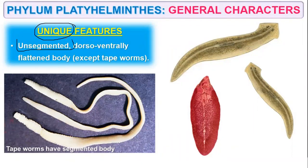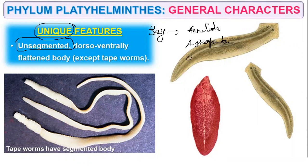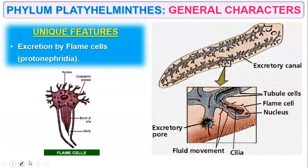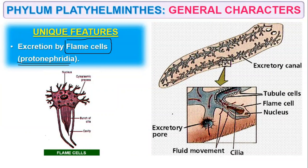The unique features of Platyhelminthus: their body is unsegmented — metamerism is found in Arthropoda, Annelida and Chordata. They have a dorso-ventrally flattened body. There are flame cells, also known as proto-nephridia, for excretion.